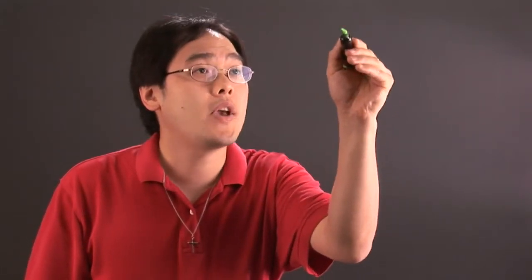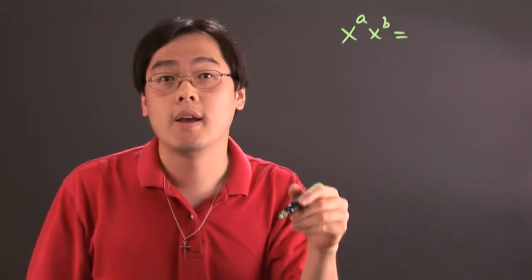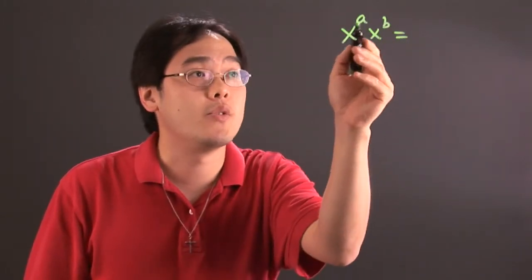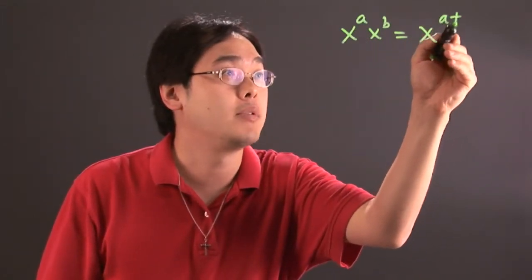If you have, for example, x to the a times x to the b, that means you can multiply. When you multiply these terms, you can add the exponents. So this would be x to the a plus b.